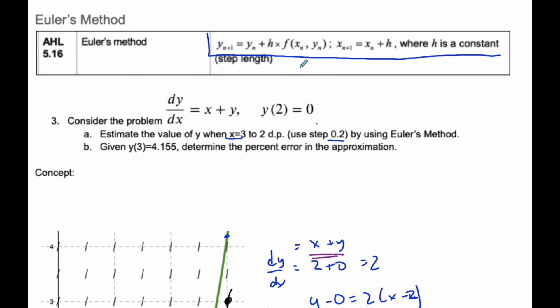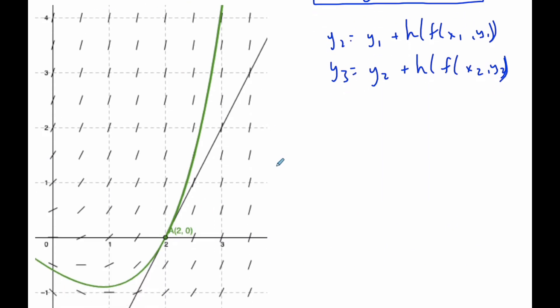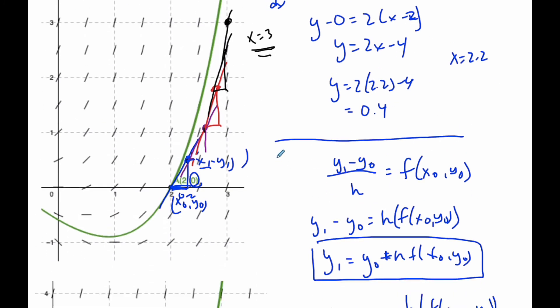h is the step length. xn+1 is xn plus h each time. And this is just the formula of the slope rearranged, where this is the derivative at the point, this is the step, and this is the y value of the point that we know. That's the premise behind Euler's method.